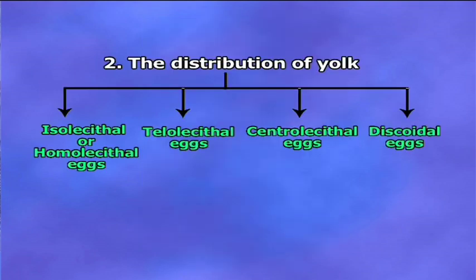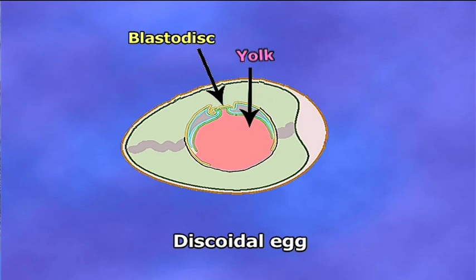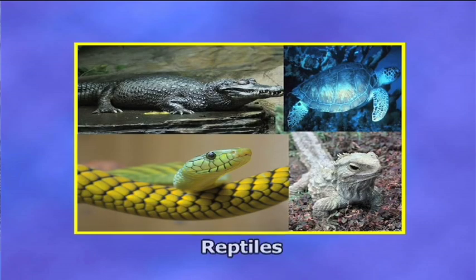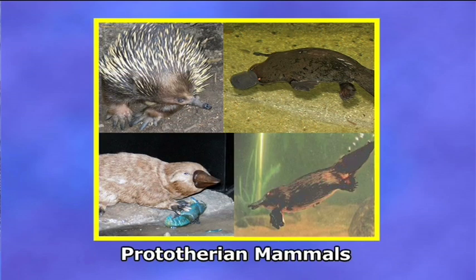Discoidal eggs: this type of egg contains a large amount of yolk. The yolk occupies the largest portion of the egg except a small disc-shaped area of cytoplasm known as the blastodisc. The blastodisc is found at the top of the yolk mass. Examples are reptiles, birds, and prototherian mammals.